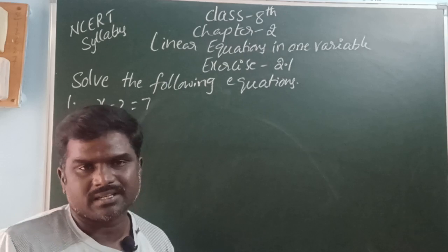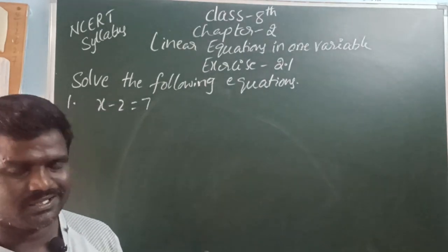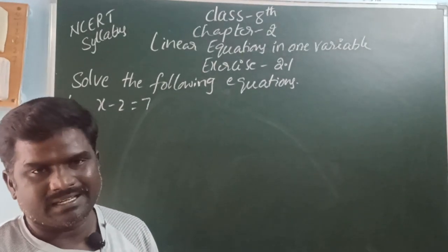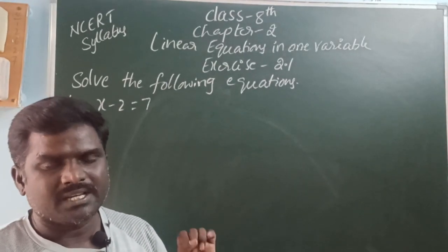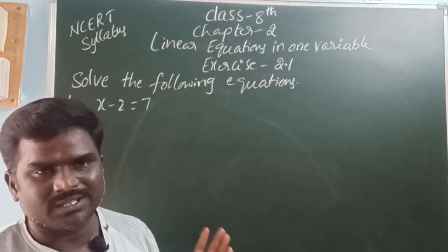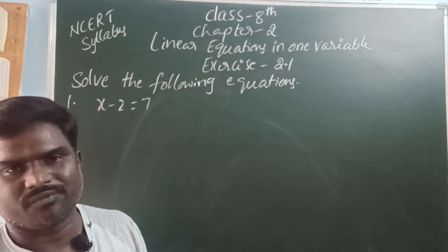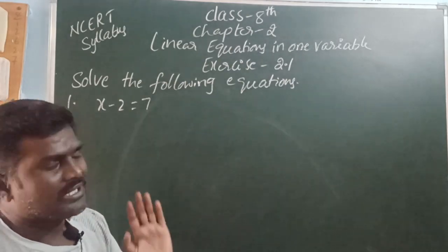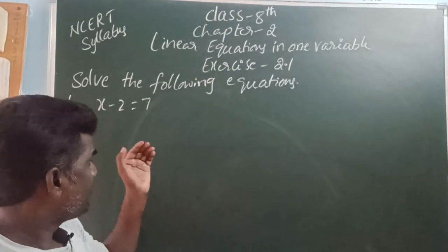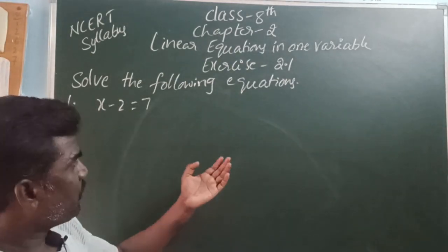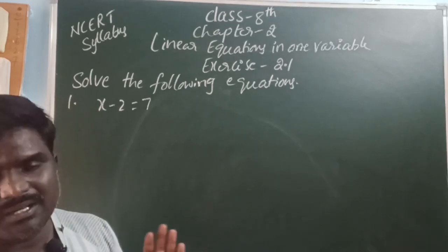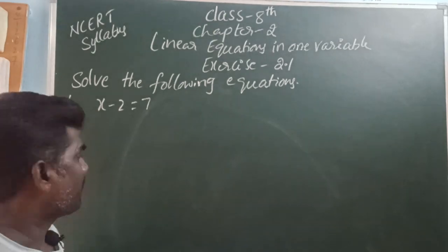There are 4 methods for solving linear equations in one variable. The first method is trial and error method. Next, without transform method. Next, with transform method. Next, graphical method. We can do any method, but here graphical method is not possible. So from the first 3 methods, we can choose any one.